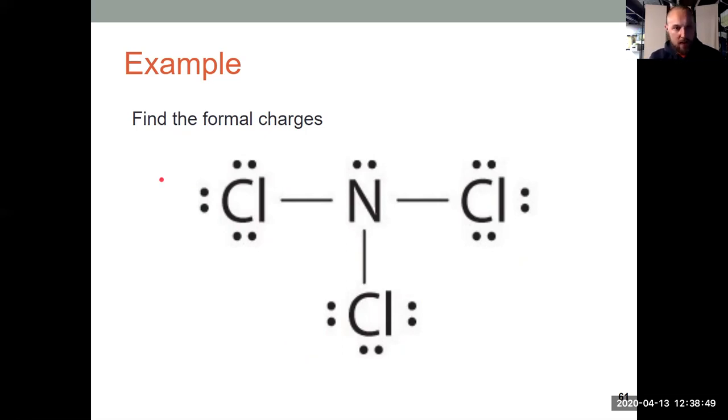Chlorine has seven valence electrons, being in group 17. It has six electrons that are belonging to lone pairs. And it has two electrons in this single bond. One half of two is one. So if I'm calculating the formal charge of chlorine, it's seven valence electrons minus six lone pair electrons minus one bond. The formal charge of each of the chlorines is zero.